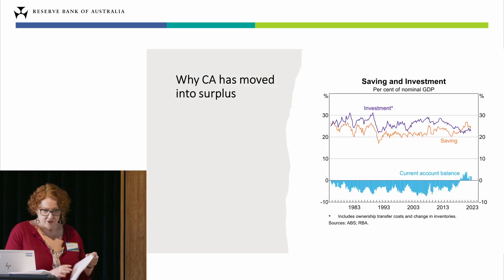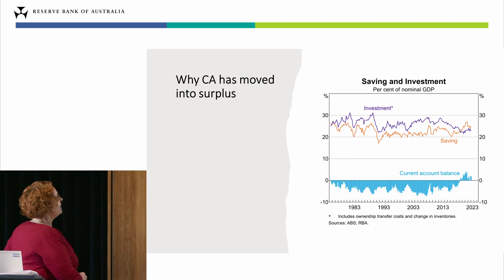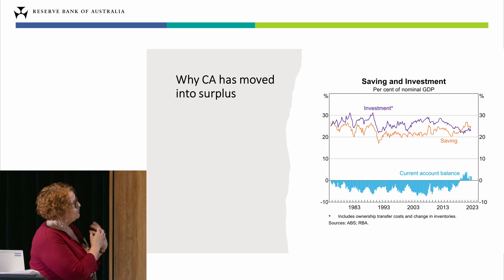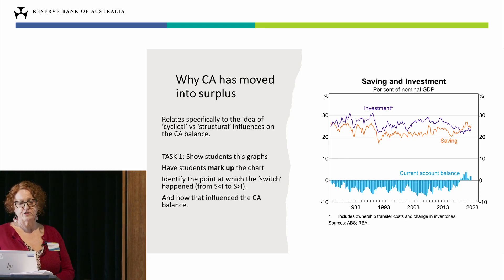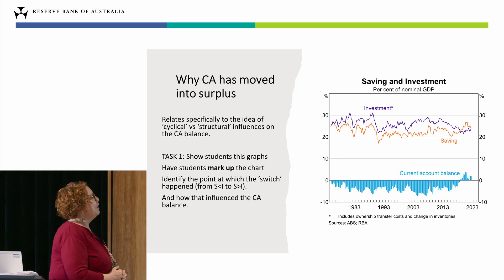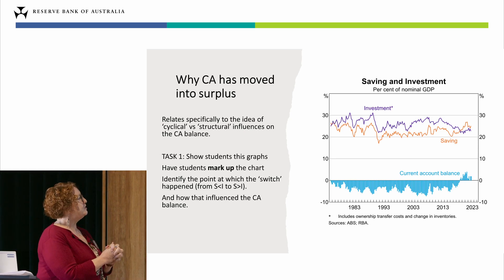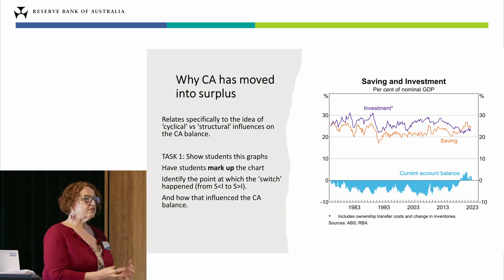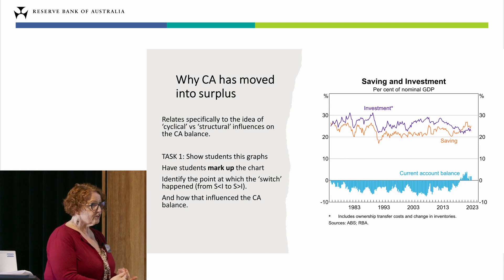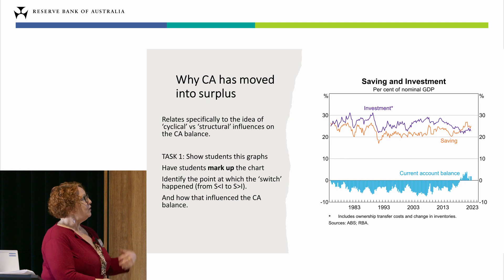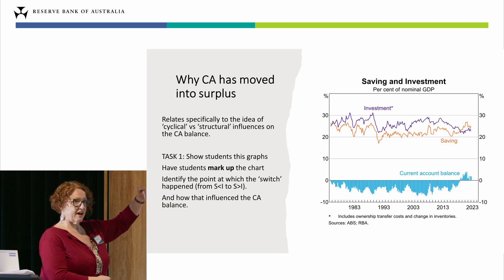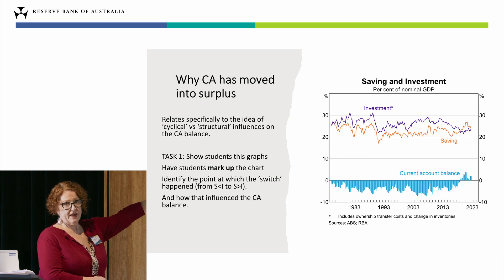I particularly like this diagram from Tim's presentation, where he shows the relationship between investment and saving and how that's reflected in the current account balance. I would show this to my students and talk about the changes. This is where we come to the idea of structural versus cyclical influences on our current account balance — the idea that over time, as our savings patterns have changed, as we have become better at saving through superannuation and those funds have been invested overseas, and as our savings has exceeded our investment, we can see very clearly the move into a current account surplus.